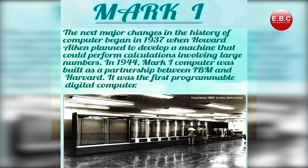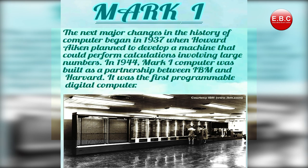The last topic is Mark I. The next major change in the history of computer began in 1937, when Howard Aiken planned to develop a machine that could perform calculations involving large numbers. In 1944, Mark I computer was built as a partnership between IBM and Harvard. It was the first programmable digital computer. Computer ki history mein yeh next sabse bada change 1937 mein start hua, aur 1944 mein Mark I — IBM aur Harvard ke beech partnership ke form mein banaya gaya — first programmable digital computer tha, jo sabse zyada powerful aur bada computer tha calculations ke liye.